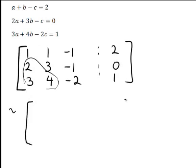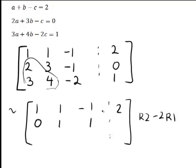So first of all, looking at row 2, row 2 minus 2 row 1 will give us the correct form. So row 1 itself just stays the same and we'll then write that row operation r2 minus 2r1 over here. So 2 minus 2 times 1 is 0, 3 minus 2 times 1 is 1, negative 1 minus 2 times negative 1 is 1, 0 minus 2 times 2 is negative 4.